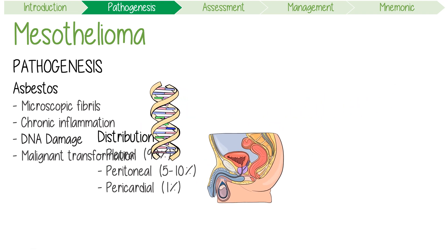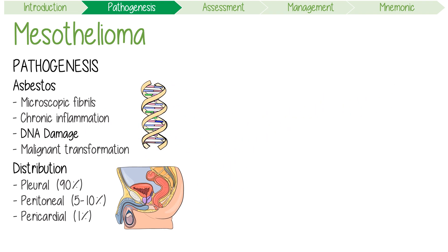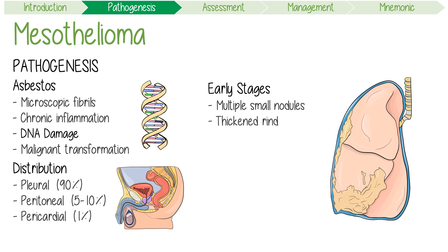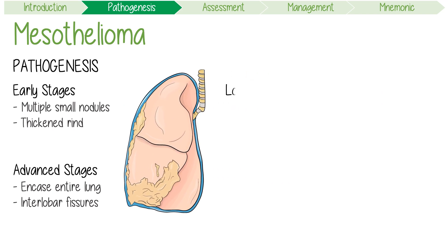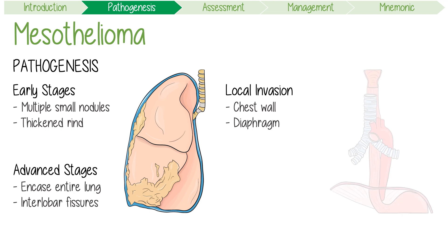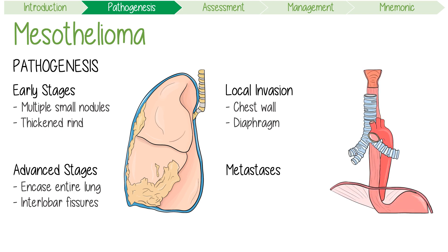In terms of the growth pathology of malignant pleural mesotheliomas, early stage tumours present as multiple small nodules. As the tumour progresses, these nodules coalesce to form a thickened rind of tumour that fuses the parietal and visceral pleura. At a more advanced stage, the tumour typically encases the entire lung and extends along the interlobar fissures. Local invasion into regional organs can affect the chest wall and diaphragm. Metastases can also spread throughout the circulation, particularly to the liver.